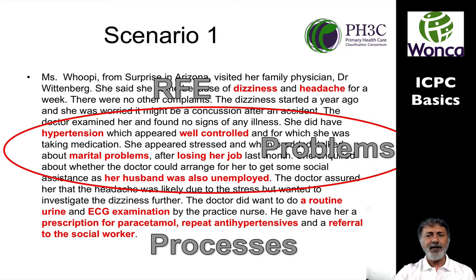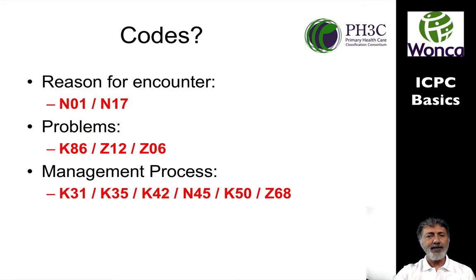In scenario one, Ms. Whoopi has two reasons for encounter: dizziness and a headache. The problems are hypertension, which seems well controlled, some marital problems — she's lost her job and her husband is also unemployed. Processes included a urinalysis urine examination, an ECG examination, prescribing various drugs, and referring the person to a social worker. The reasons for encounter would be N01 and N17. The problems would be K86, Z12, and Z06. The management process would be K31, K35, K42, N45, K50, and Z68.